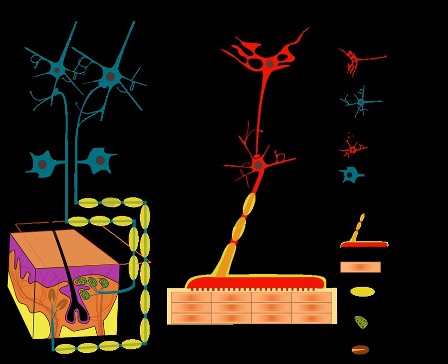These models explain why it is impossible to tickle yourself. A sensation is experienced as ticklish when it is unpredictable. However, forward models predict the outcome of your motor movements, meaning the motion is predictable, and therefore not ticklish.